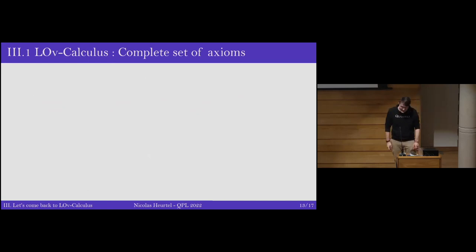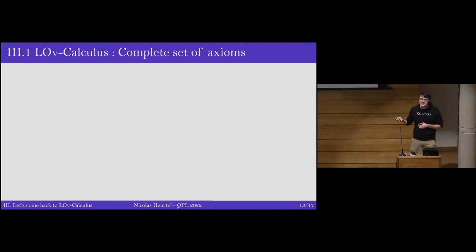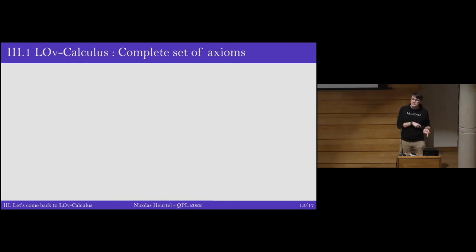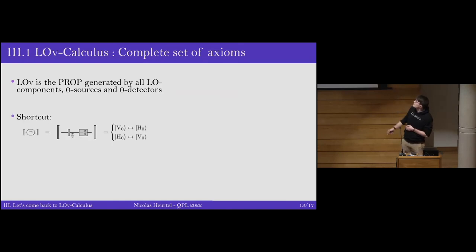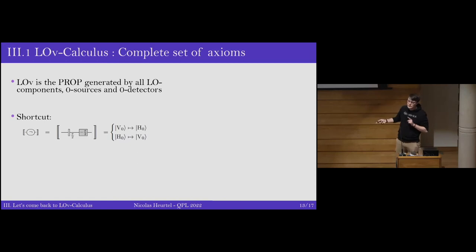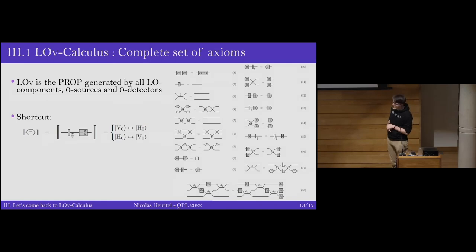Coming back to LOv: we have the rewriting system with unique normal forms for circuits with only beam splitters and phase shifters. The full LOv calculus with all the components is captured by 18 equations, which are basically the axioms of the LOv calculus. A shortcut notation is introduced for negation, which swaps V and H. These 18 equations form a complete set.